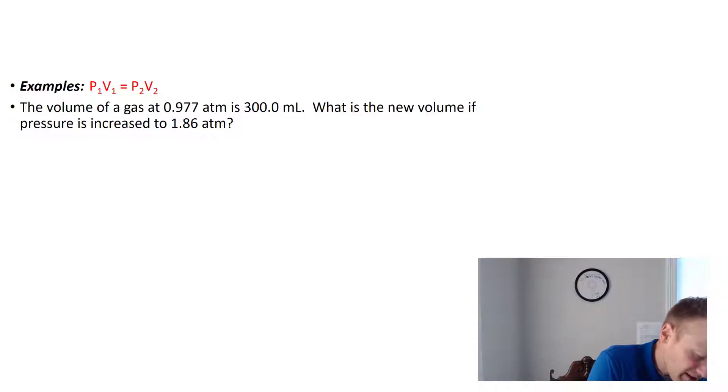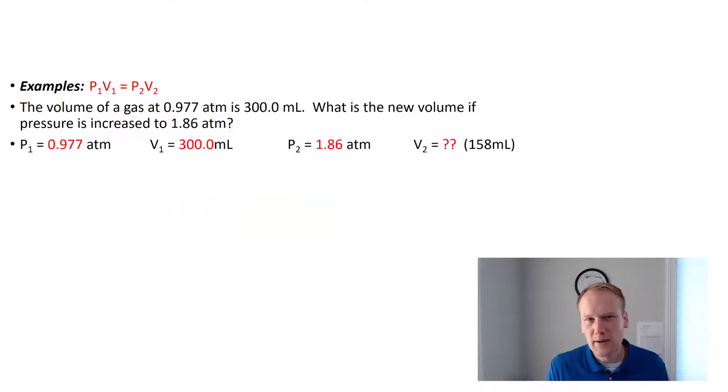It says the volume of a gas at 0.977 atmospheres is 300 milliliters. It's telling us the pressure and the volume before the change is taking place. So we're going to label that as P1 V1. And then it says what is the new volume if the pressure is increased to 1.86? So this would be P2. We'd set this up as 0.977 times 300 equals 1.86 times V2. To solve this, we'd divide both sides by 1.86 and we'd get V2 by itself. And when we solve for V2, we'd see that it's 158 milliliters.